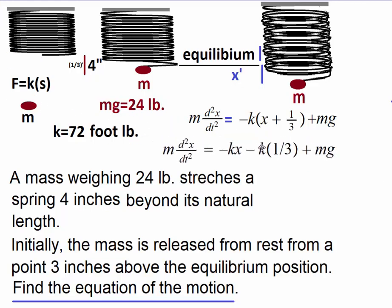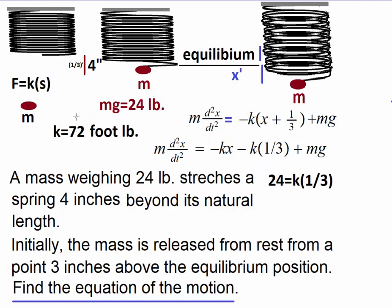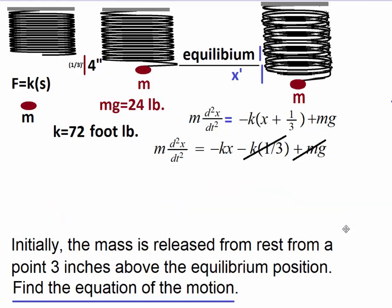Simplifying by expanding the brackets, we get negative K times one-third minus Kx plus mg. Since 24 equals K times one-third and mg equals 24 pounds, these two terms cancel each other. Our equation of motion simplifies to m times d²x/dt² equals negative Kx, as a consequence of Newton's second law of motion.